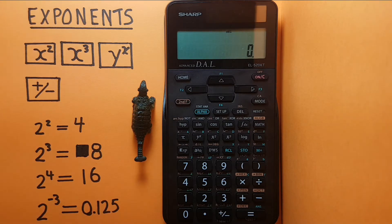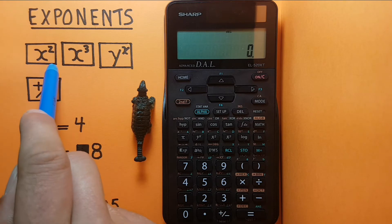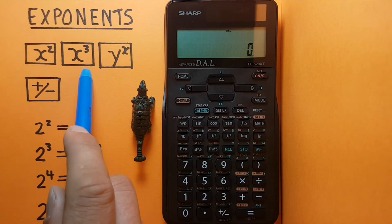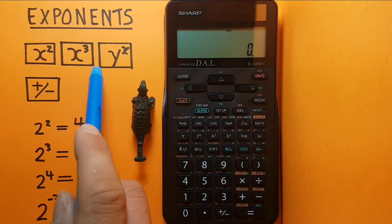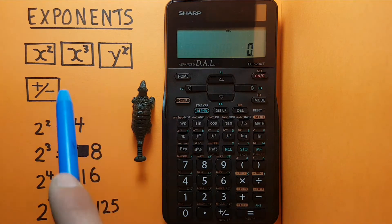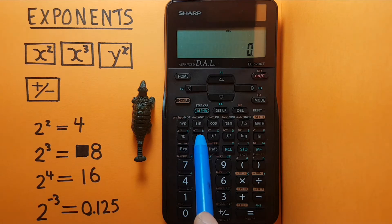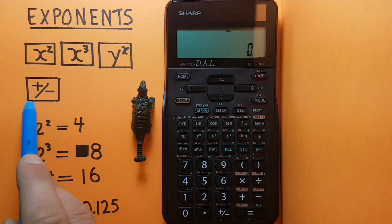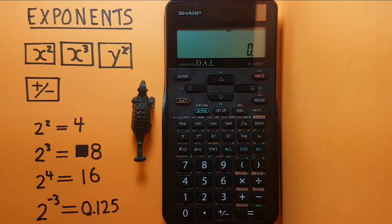To do this we're going to be using a few keys: the x squared key located right here, the x cubed key which is located here, the y to the x key which is located here, and if you want to change the sign of our exponent positive to negative, we'll use the positive negative key located down here at the bottom.